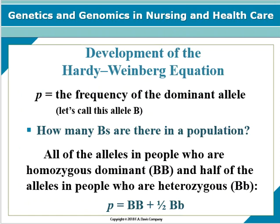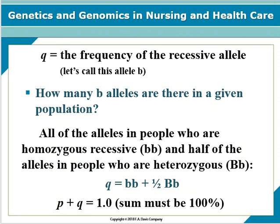The Hardy-Weinberg equation helps scientists keep track of how populations change and also helps clinicians appreciate why people with ancestors from the same geographic region share traits. The frequency of the dominant allele is calculated from all the alleles in people who are homozygous dominant and half of the alleles in people who are heterozygous dominant. There are also picture examples in your book in the chapter to review.